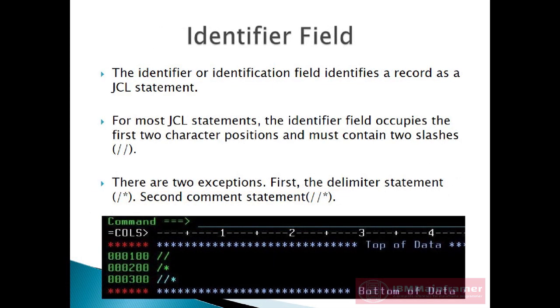First, the identifier field or identification field. In position 1, we identify a JCL statement as containing two forward slashes, and that is the basis by which we recognize a JCL statement. Without the two slashes, any information is going to be simply interpreted as data, and as a result, depending on where it is placed or depending on how it is being used, would likely result in a syntax error.